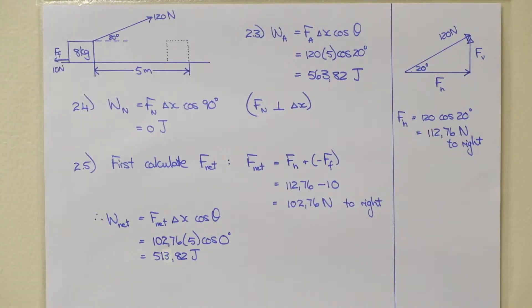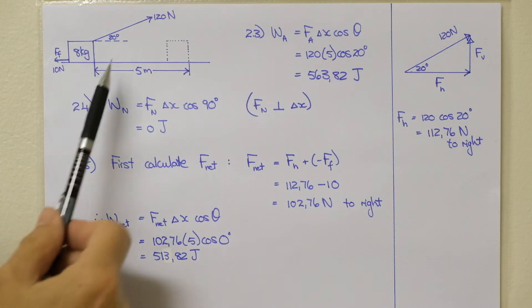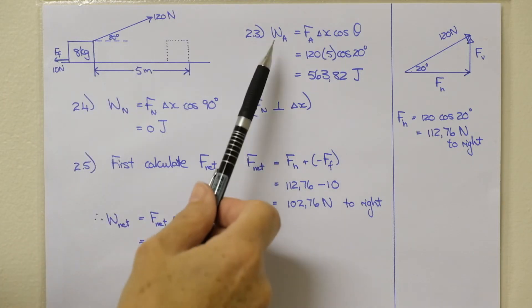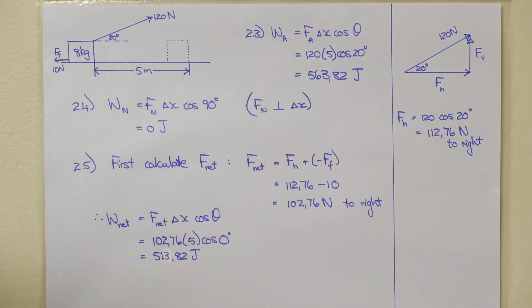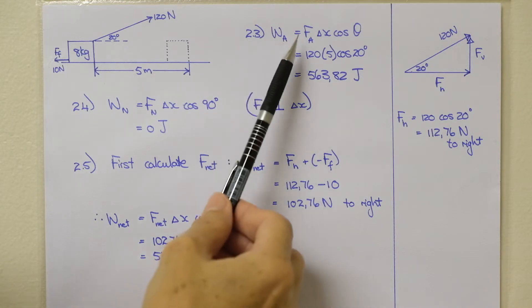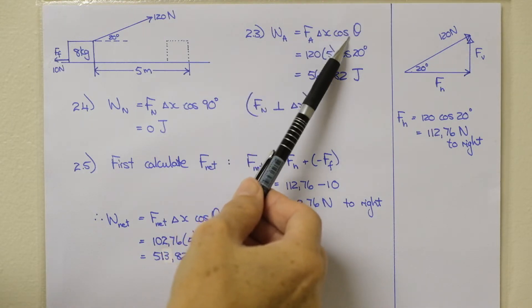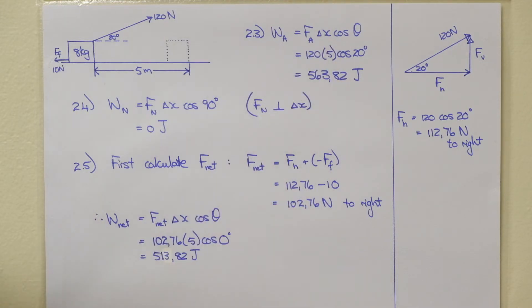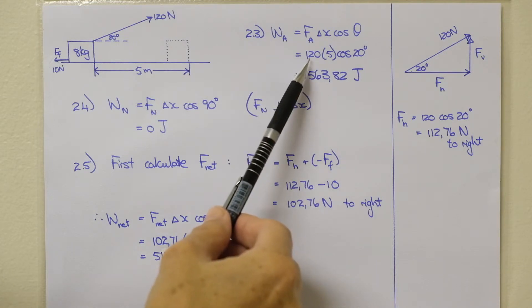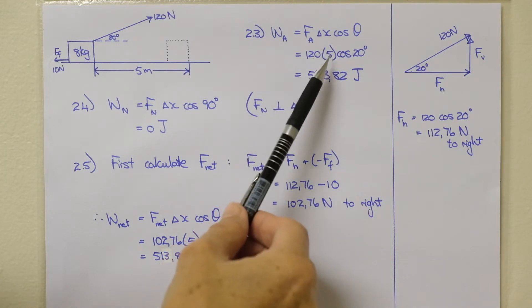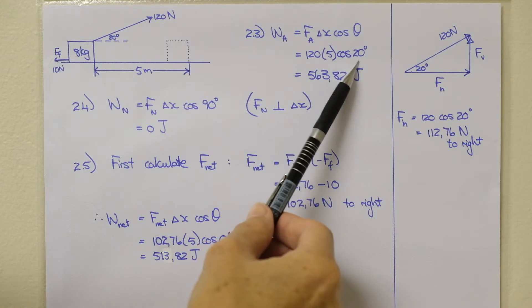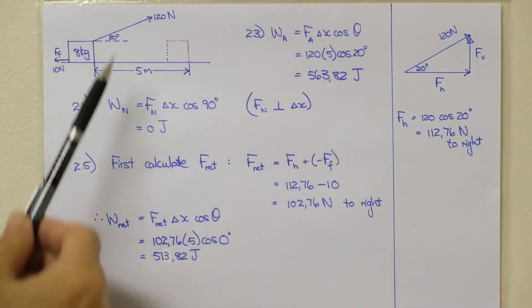In 2.3 we are going to calculate the work due to the applied force. It is the 120 newton force which is at 20 degrees to the horizontal. We are going to use the same equation as we have been using all along. Work is equal to the force times the displacement times the angle between the force and the displacement. The magnitude of the force is 120 newtons. The displacement is 5 meters.